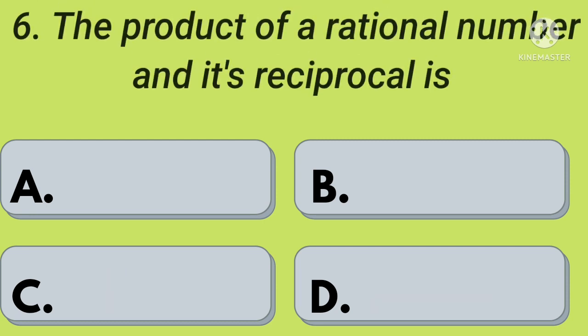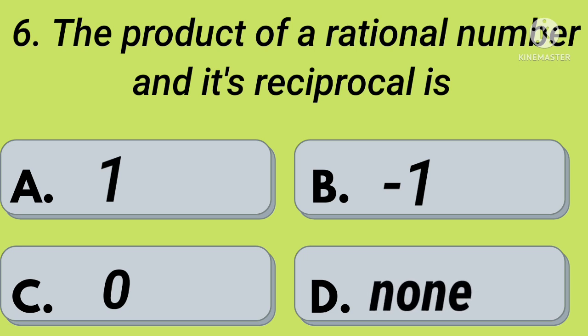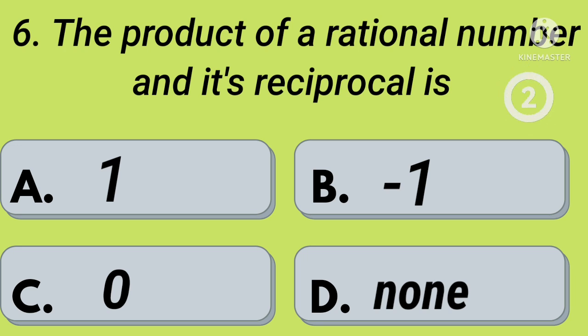Sixth question: the product of a rational number and its reciprocal is — option A: 1, option B: minus 1, option C: 0, option D: none. Your time starts now. Right, option A: 1.